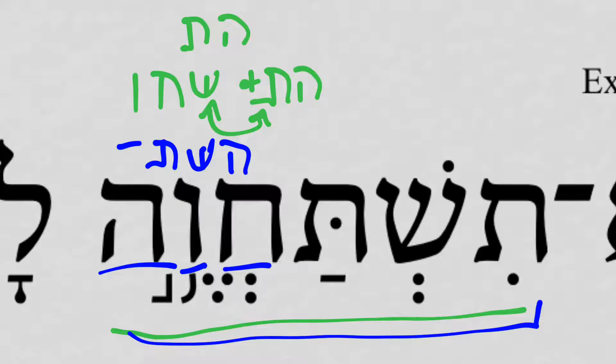We can see that tishtachave is an imperfect 2ms: you shall not bow down.